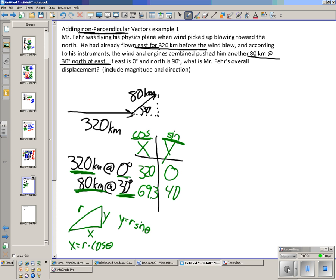I add these up and get my big x and my big y. These are pretty easy to add up. I'm going to have 389.3 as my big x and then 40 as my big y.